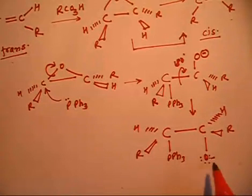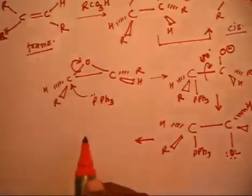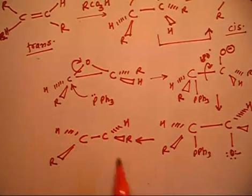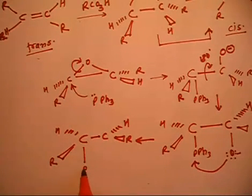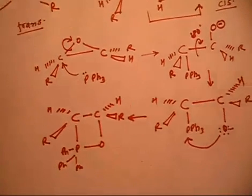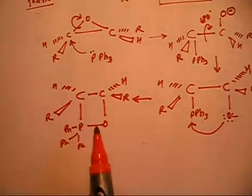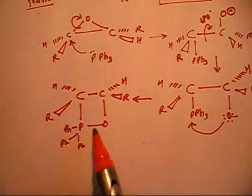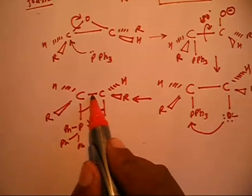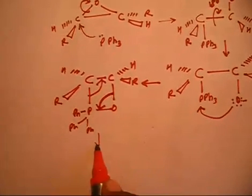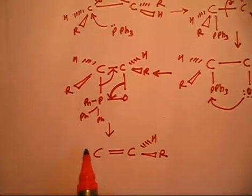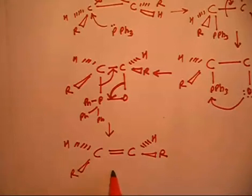Now the oxygen can attack on phosphorus to form a four-membered cyclic transition state, since phosphorus can expand its octet and act as a Lewis acid. In this four-membered cyclic transition state, we have C, H, P, and O. To eliminate PPh3=O (phosphine oxide), the C–O bond breaks, forming a positive charge on carbon, which drives formation of the C=C double bond, giving the cis-alkene product with H in the back and R in the front on both carbons.